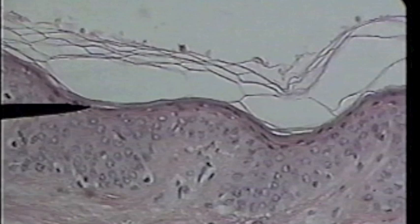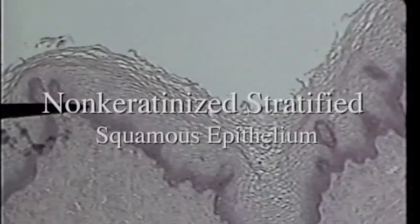Thin skin is found everywhere on the body with the exception of the soles of the feet and the palms, which are thicker than we find elsewhere in the body. The difference between thick skin found on the palms and soles of the feet and thin skin found elsewhere has to do with that layer of keratinization.